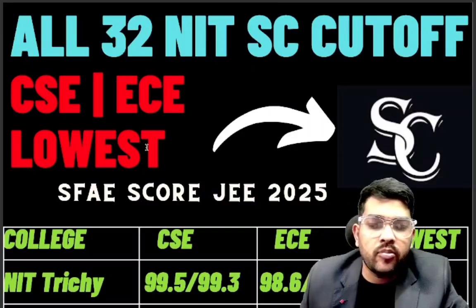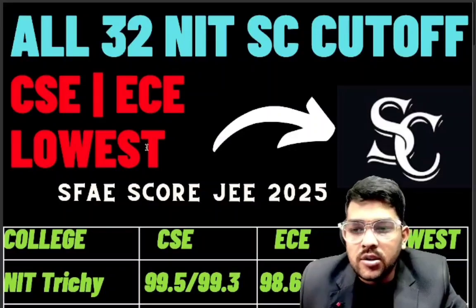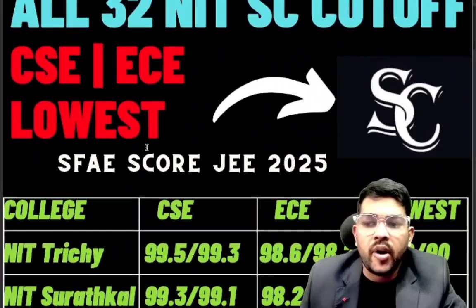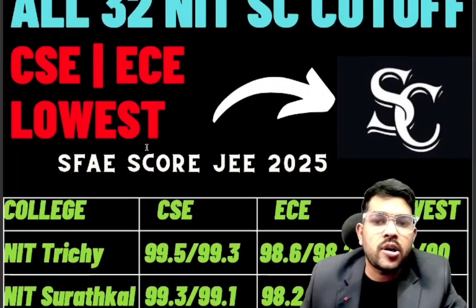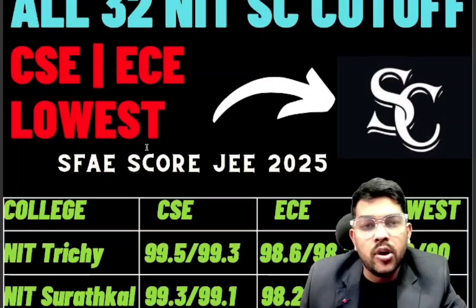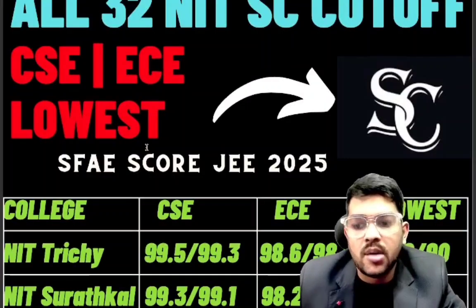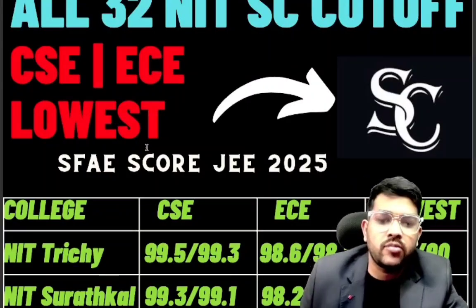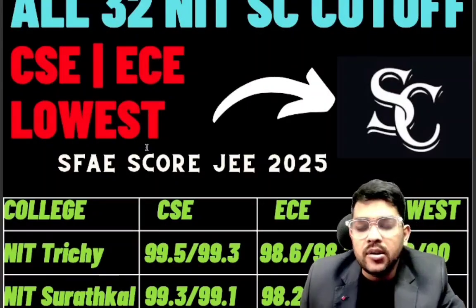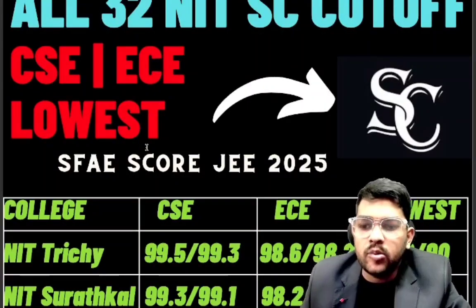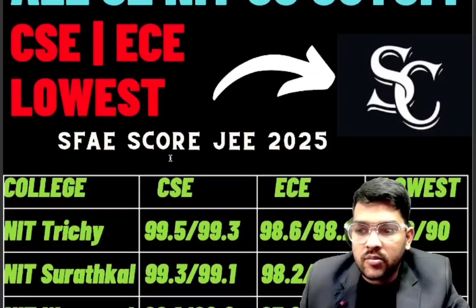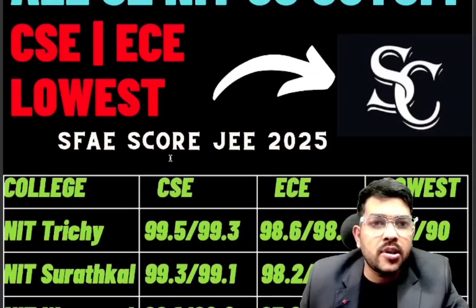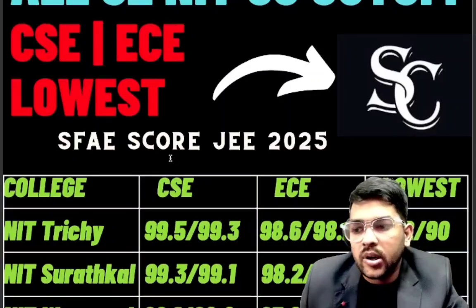Here is the information for CSE, EC, and lowest branch — all three types of branches. This will provide you a safe score for JEE 2025, whether you got it in first attempt or are targeting a second attempt. This will help you get the right score and the right college.